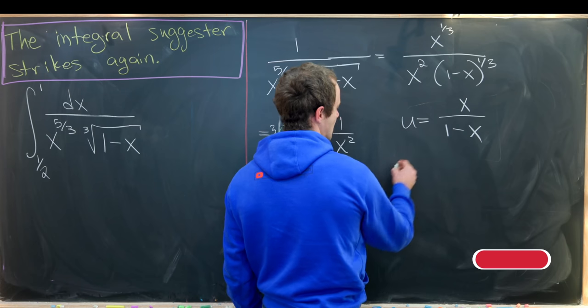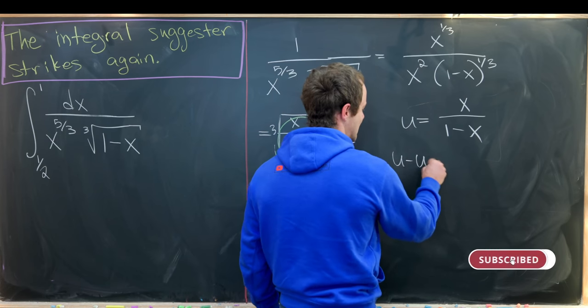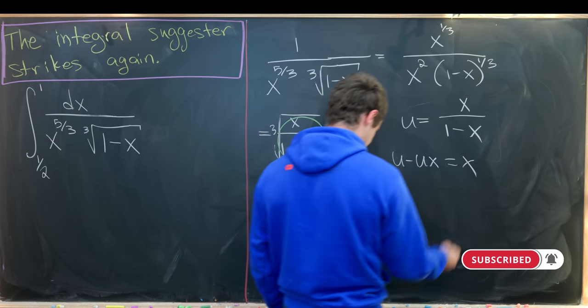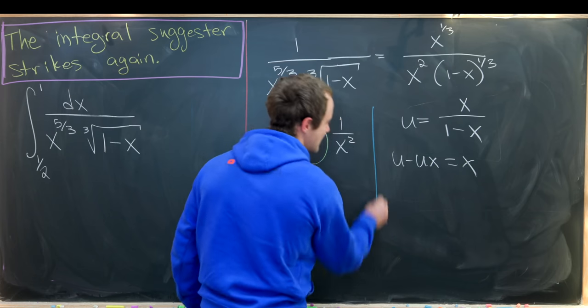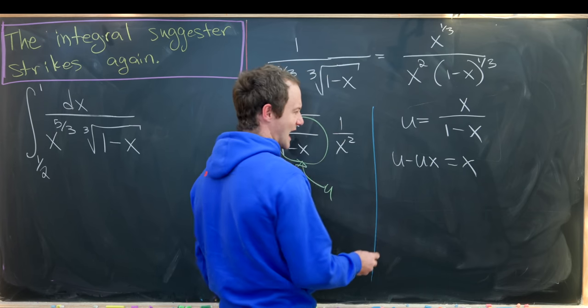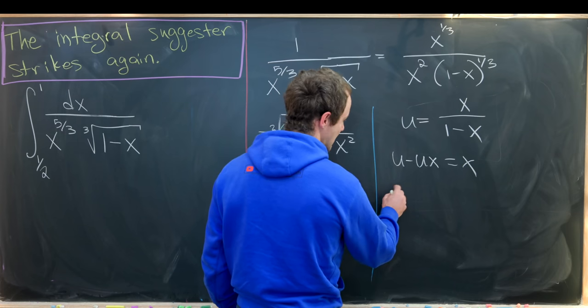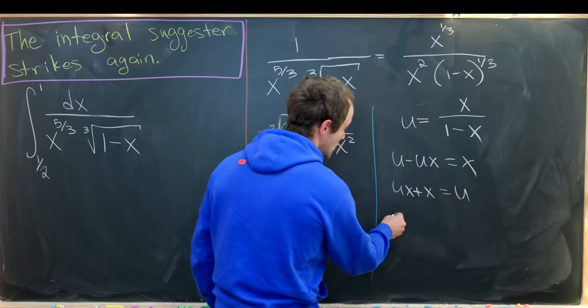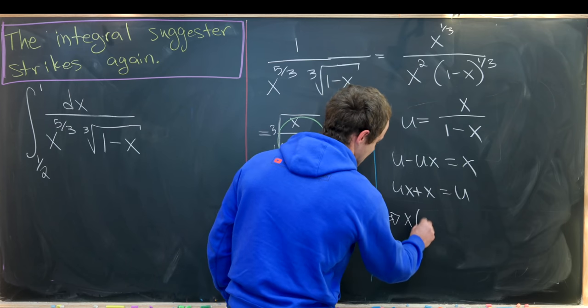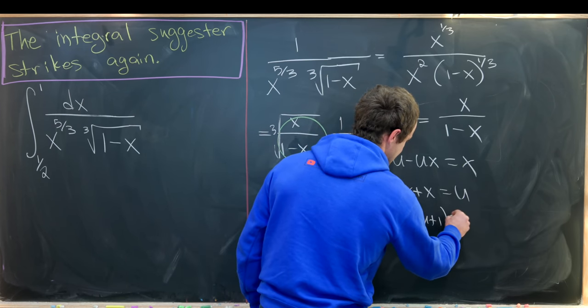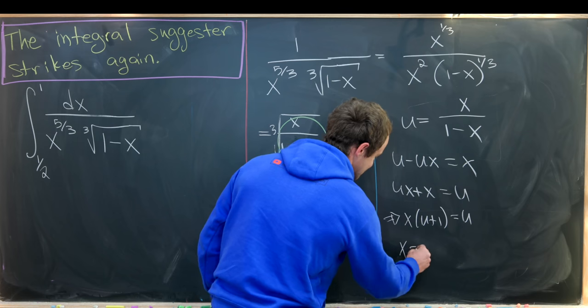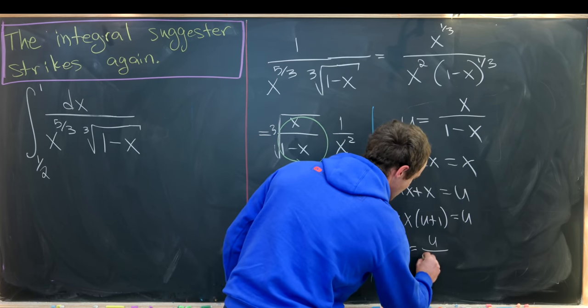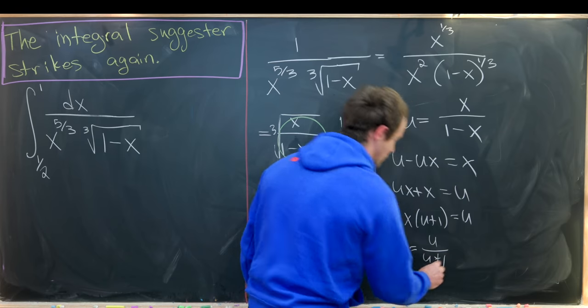Well then we can maybe cross multiply. We'll get u minus ux equals x. And then from there we can get everything with an x on one side of the equation. That will be ux plus x equals u, which tells us that x times the quantity u plus 1 is equal to u.